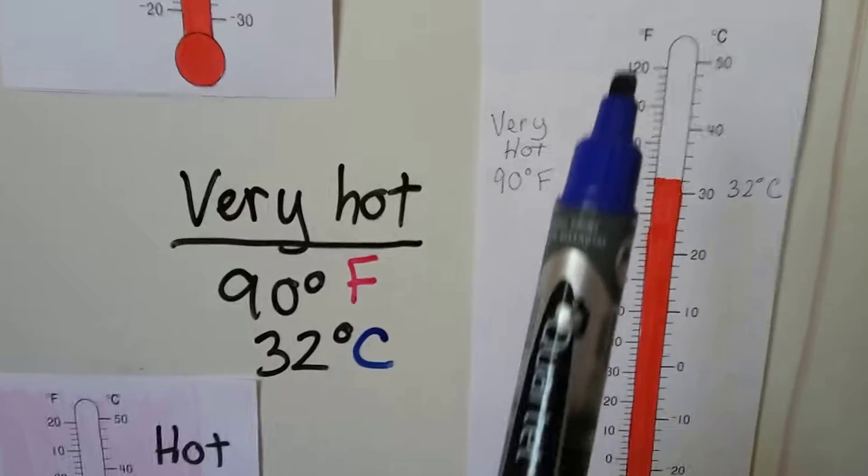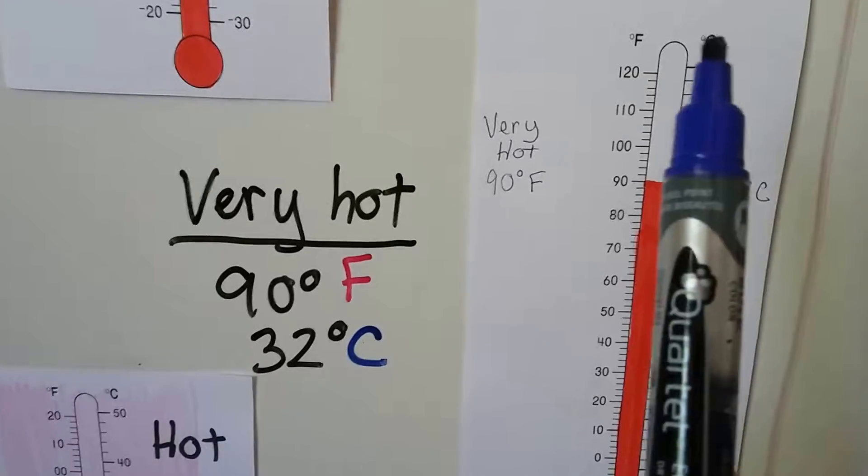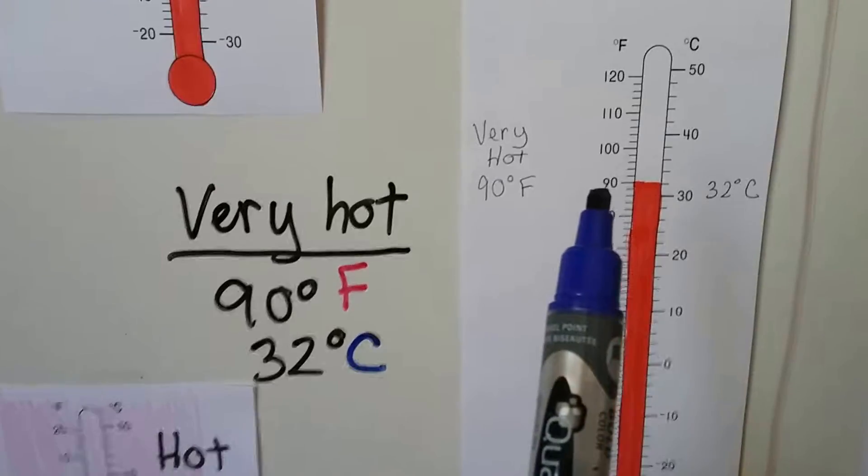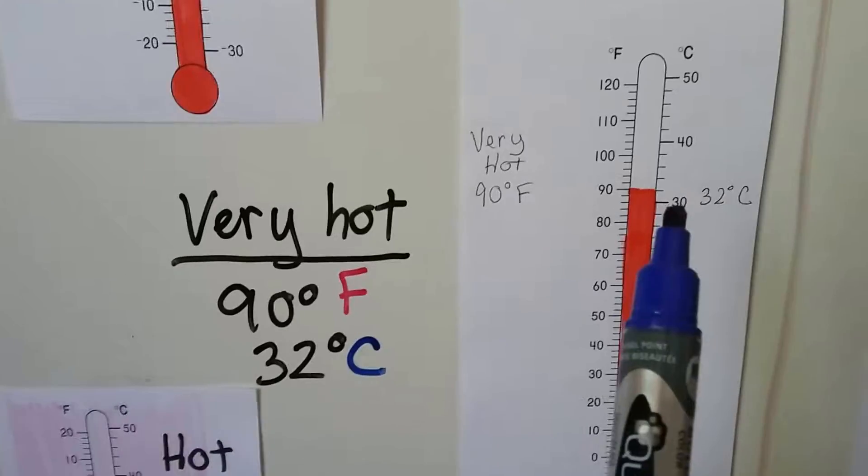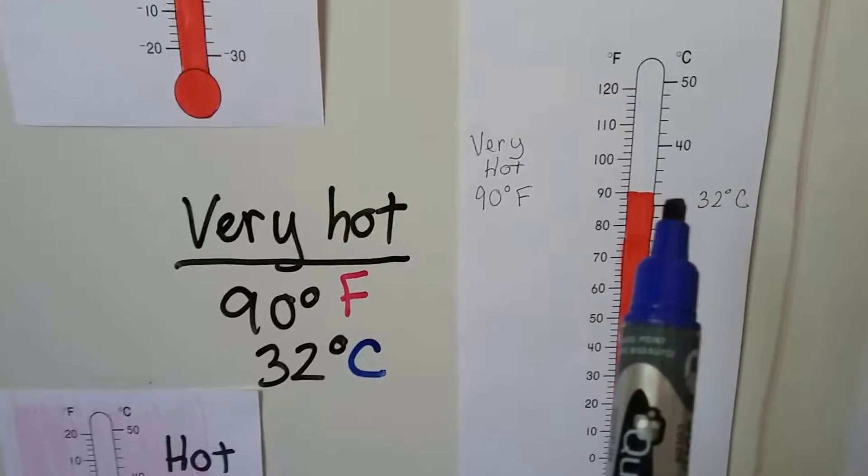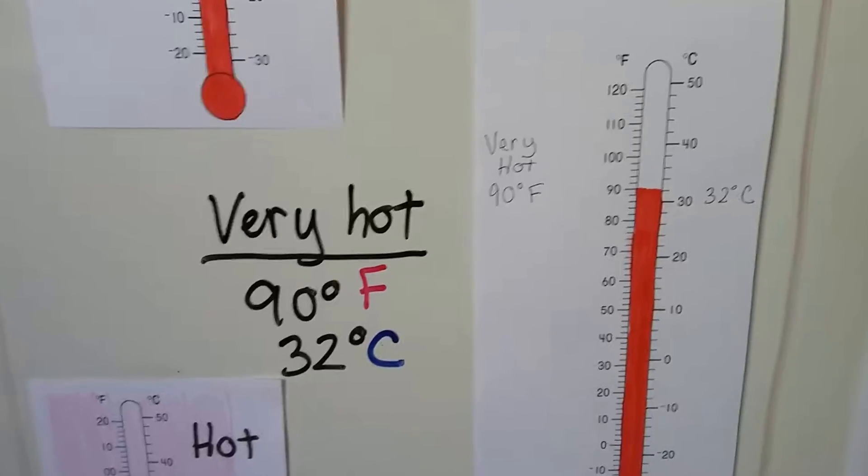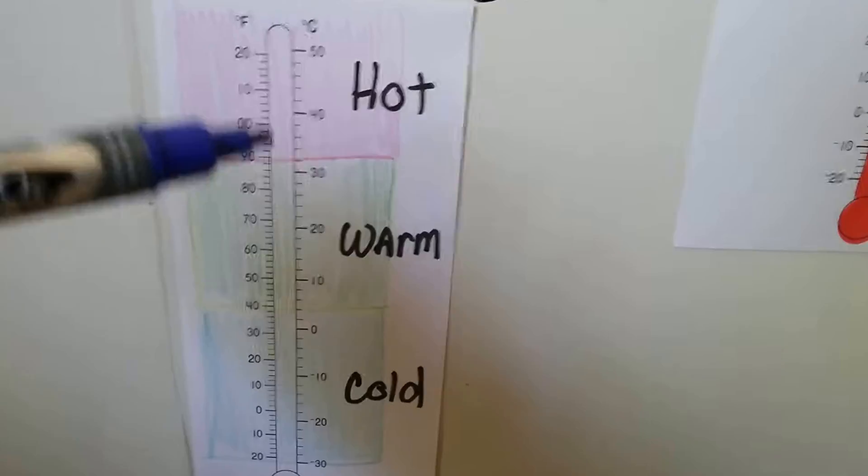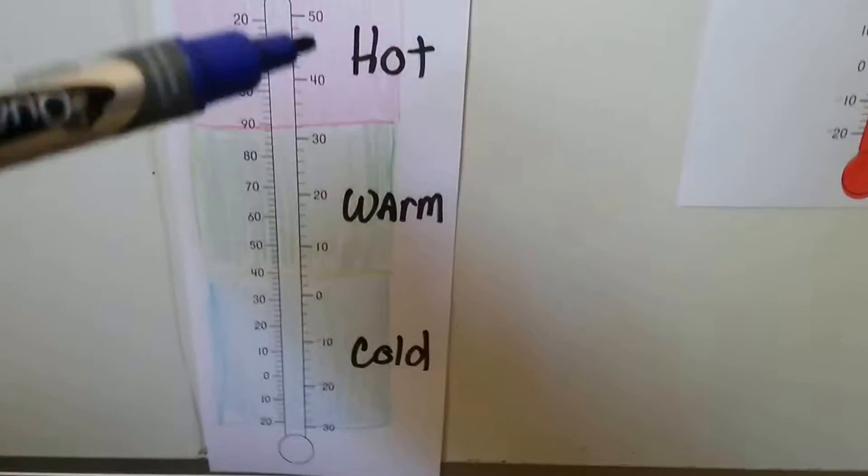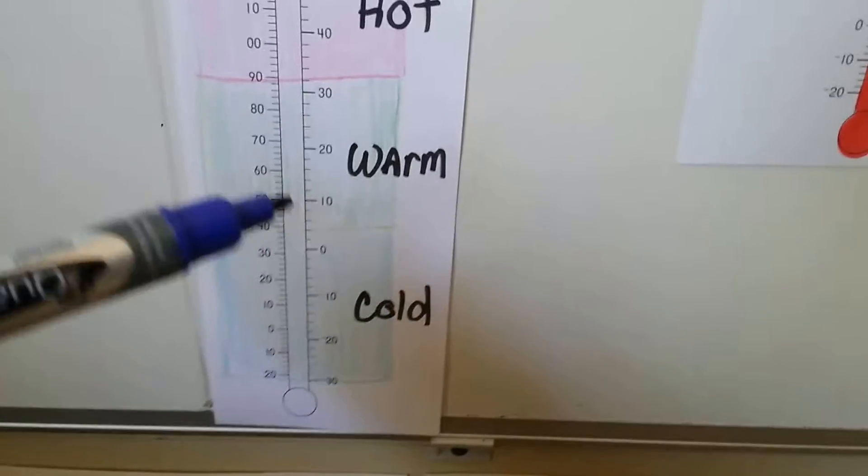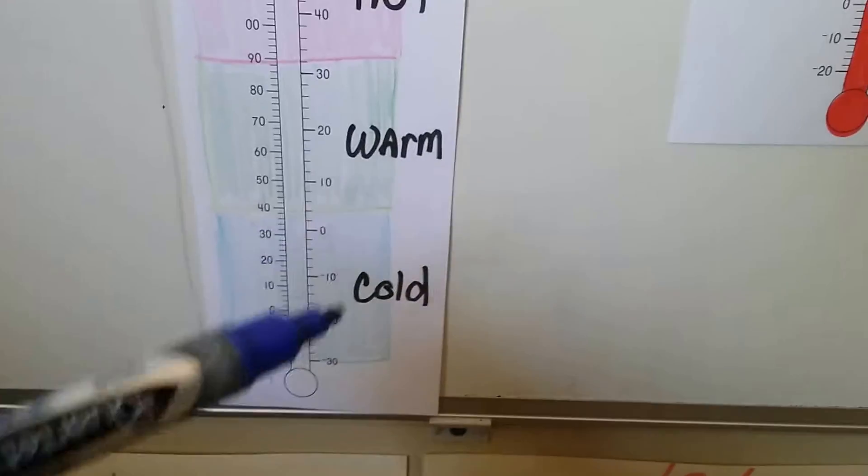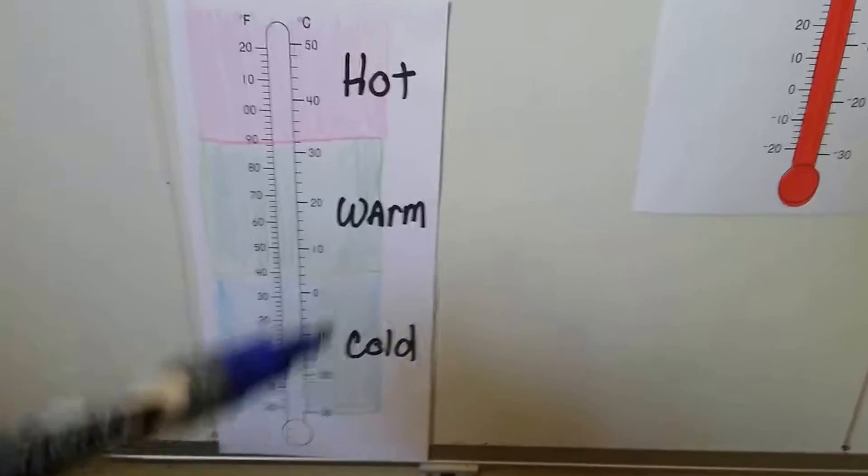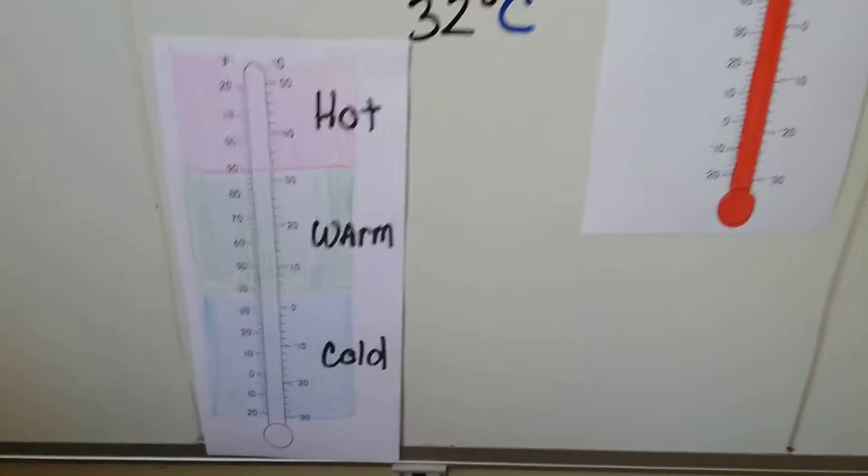So remember, this side is Fahrenheit, you can see the F, and this side is Celsius. 90 degrees Fahrenheit is very hot, and that would be around 32 degrees Celsius. See that? So our thermometer up here would be very hot outside. Here it's warm outside, and if it's down here, it's going to be very cold. So depending on where that red liquid is, it's going to tell us how hot, warm, or cold it is outside.